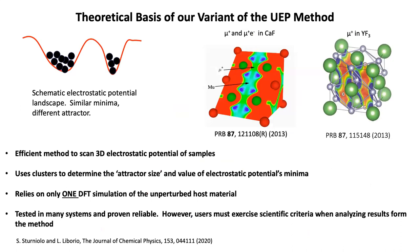Let me start with the key theoretical concept behind the method, which is the use of the unperturbed electrostatic potential of the host material. There is a paper with a detailed description of how the method works and how it is implemented, but here I will focus on the main ideas that differentiate our variant of the unperturbed electrostatic potential method from the classical UEP method. The classical UEP method scans the electrostatic potential looking for minima in it, which are associated to the stopping sites of muons.